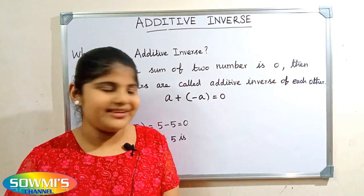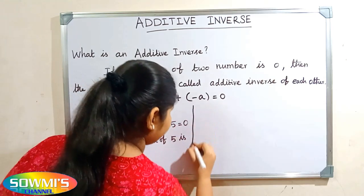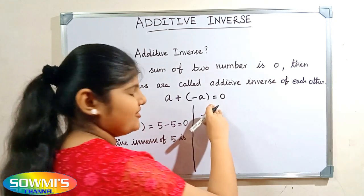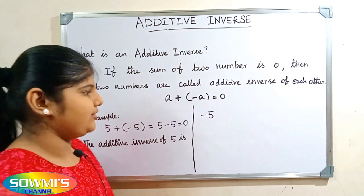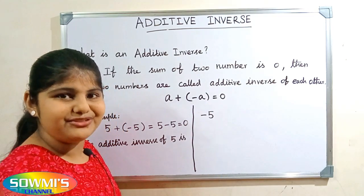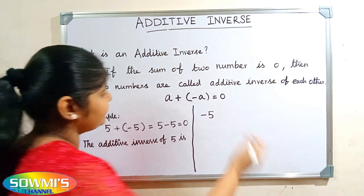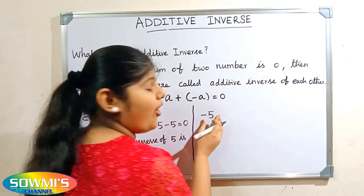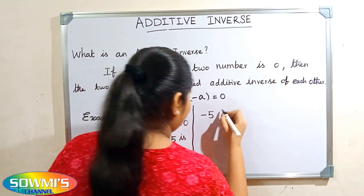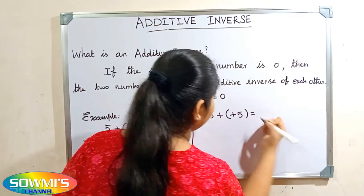Next, we will find the additive inverse of minus five. To find the additive inverse of a given number, just we have to simply take a number and add its opposite to get zero. The opposite number of minus five is plus five. So, minus five plus five is equal to...